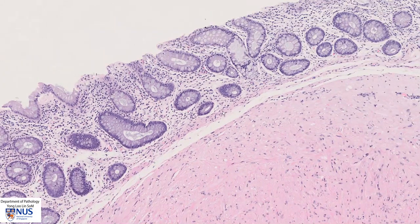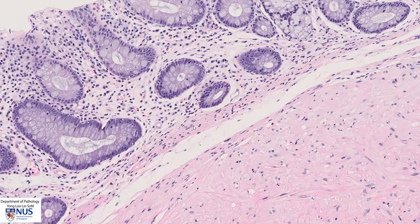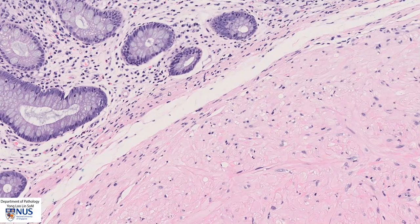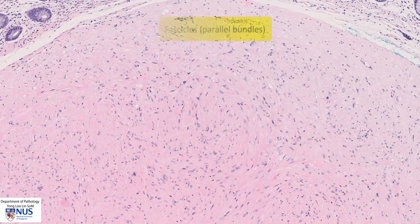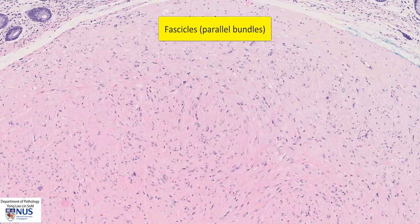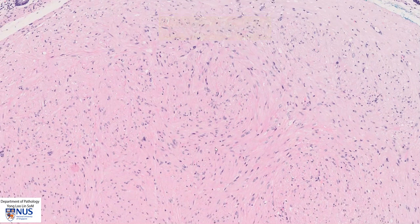This is part of the muscularis mucosae, which is composed of thin bundles of smooth muscle cells. Here is part of the tumour, and we can see that the tumour cells look very similar to those of the muscularis mucosae, because they come from the same cells, which are smooth muscle cells. Leiomyomas are benign smooth muscle tumours, hence they are composed of these parallel bundles, or what we call fascicles, of smooth muscle cells. You can see here that they are arranged in these parallel bundles, some of them quite curved.